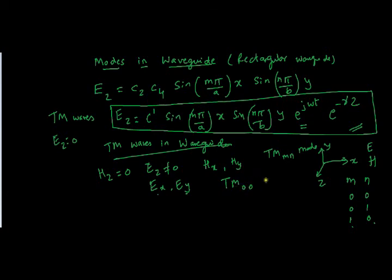In short, we say TM00 does not exist in the waveguide. It cannot exist because there will be no fields — all the field components will vanish when m equal to 0 and n equal to 0.